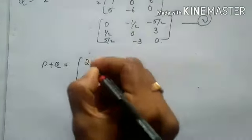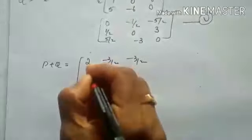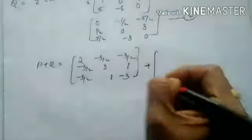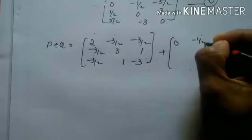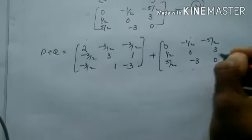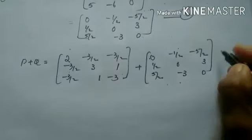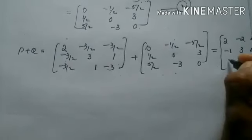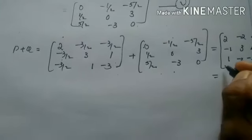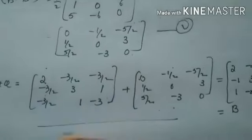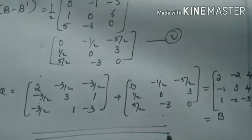Now P plus Q: adding the symmetric matrix (2, minus 3/2, minus 3/2; minus 3/2, 3, 1; minus 3/2, 1, minus 3) and the skew-symmetric matrix (0, minus 1/2, minus 5/2; 1/2, 0, 3; 5/2, minus 3, 0), we get 2, minus 2, 4; minus 1, 3, 4; 1, minus 2, minus 3. This is the same as the given matrix B. So we have successfully expressed the given matrix as the sum of a symmetric and a skew-symmetric matrix.